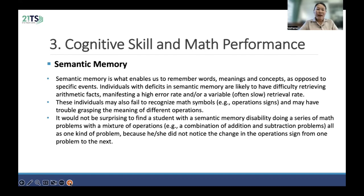So let's look at the first part of math and semantic memory. What is the mechanism of semantic memory? Semantic memory is what allows us to remember words, meanings, and concepts as opposed to specific events. Individuals with a deficit in semantic memory are likely to have difficulty recalling math facts, meaning slow retrieval, a high error rate, and other variables often including a slow or unreliable rate.